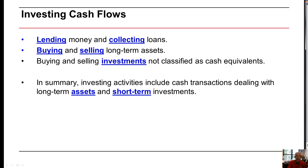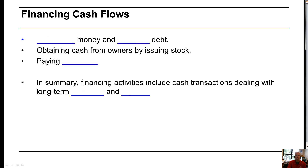Generally, everything reported in the investing section only deals with long-term assets: buying and selling of property, plant, and equipment, disposing of property, plant, and equipment, buying and selling of short-term available-for-sale securities, which are short-term investments. Those types of things are the only things reported in the investing section.